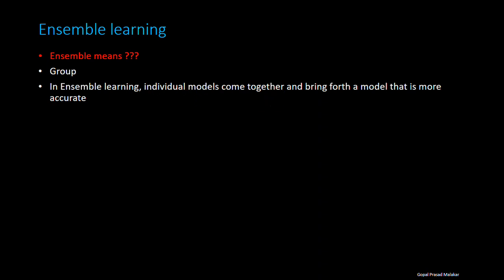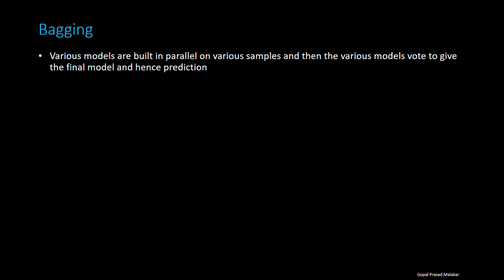Now let me explain two popular terms used in this context. One is called bagging. Bagging is all about making models in parallel on various samples. These samples may have the same variables or may have different variables. These models then finally vote to give the final model and that becomes the prediction.